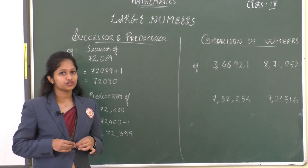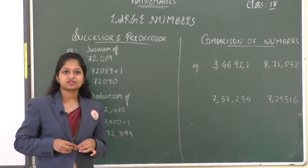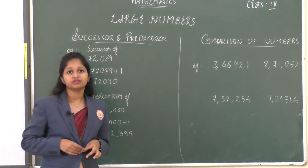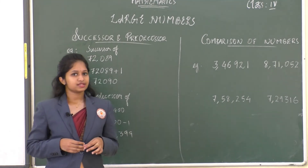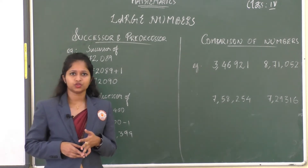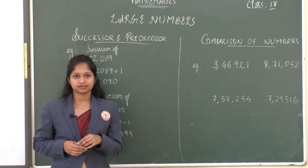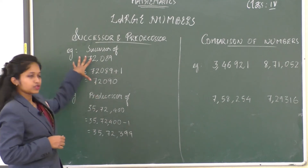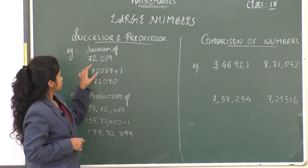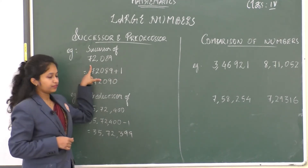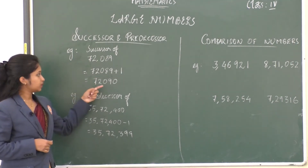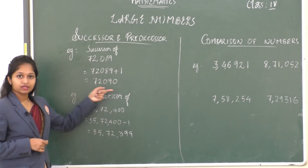Now we'll move on to successor and predecessor of a number. The successor of a number is the number that comes just after it. So the successor of 1 is 2, and successor of 5 is 6. For larger numbers, we just add 1 to it. Here I have the number 72,089. When we add 1 to it, it becomes 72,090.